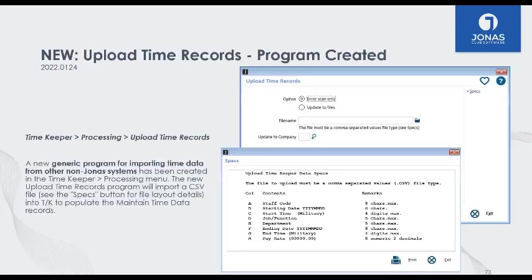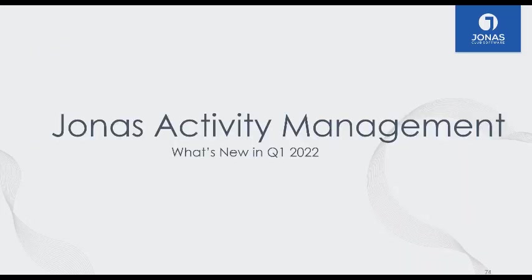In the Timekeeper module, you can now upload time records. If you have a third-party company handling clocking in and out, it's easy to upload that information directly into Jonas. All you need is an Excel spreadsheet with your staff codes, date, time, job, department, and pay rate. As long as your third-party clock-in/out program can export that to Excel, you can upload it into Jonas and run all sorts of integrated reports throughout your Jonas program.